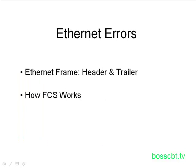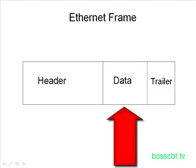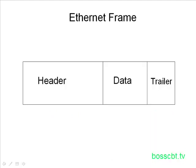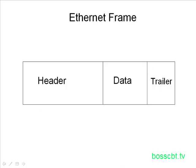Let's take a look at the header and the trailer of an Ethernet frame. We have a header, a data portion, and a trailer. The header has various fields in it, such as the MAC source address, the MAC destination address, a type field, and a length field. We're not going to drill too deeply into the header — we've saved that for another tutorial. Just know that it exists and has quite a few more fields in it than the trailer.